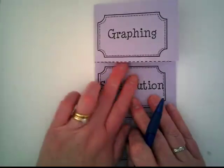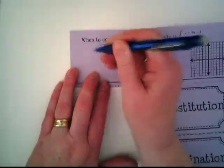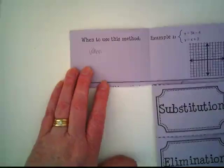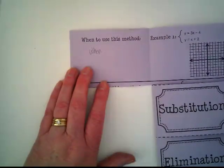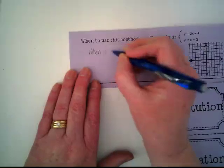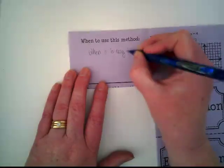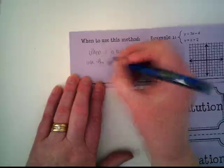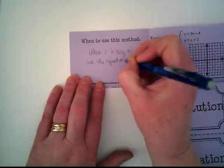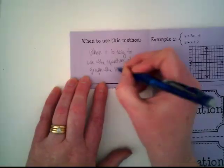I'm aware that the lines on these are slightly off, but let's go ahead and open up for graphing. When we use this method is when the equations are so easy you can just create the line. Really, I think of graphing as when it's easy to use the equations to graph both lines.